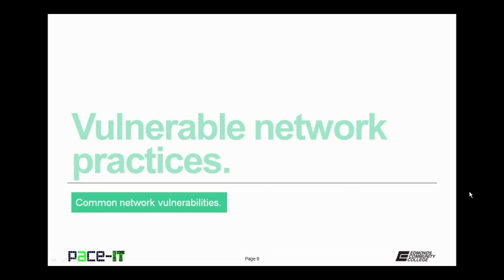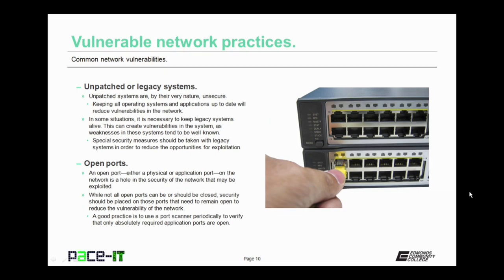Now it's time to talk about vulnerable network practices. First up are unpatched or legacy systems. Unpatched systems are, by their very nature, unsecure. Keeping all operating systems and applications up to date will reduce vulnerabilities in the network and help harden it against attack. In some situations it is necessary to keep legacy systems alive, but weaknesses in these systems tend to be well known. Special security measures should be taken, and one of the best steps is placing these legacy applications or systems on their own network or virtual local area networks.